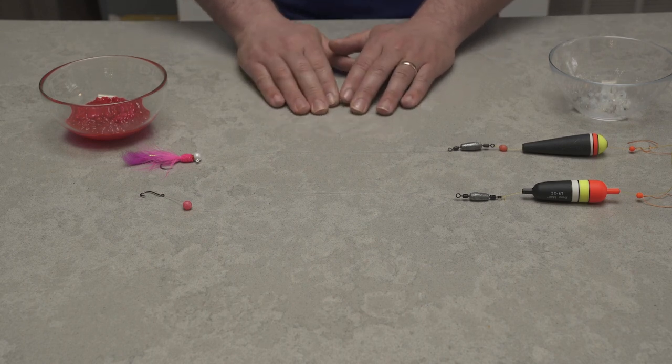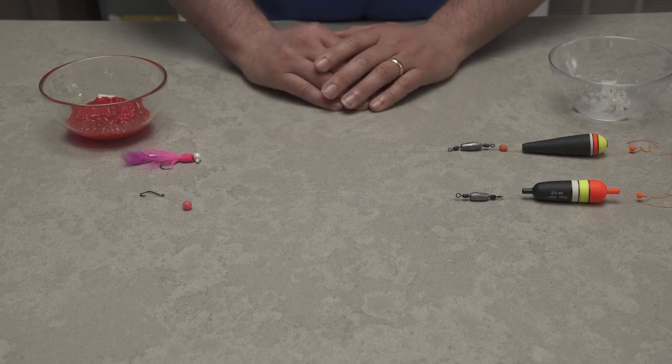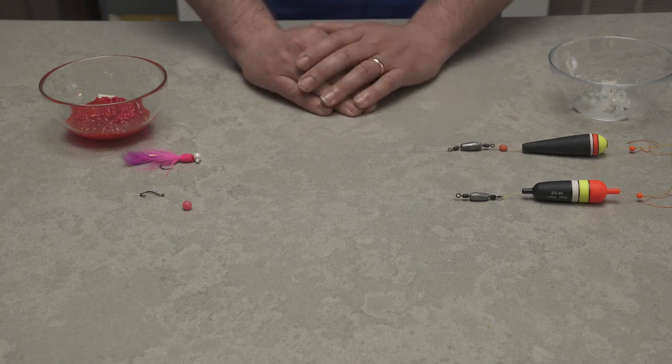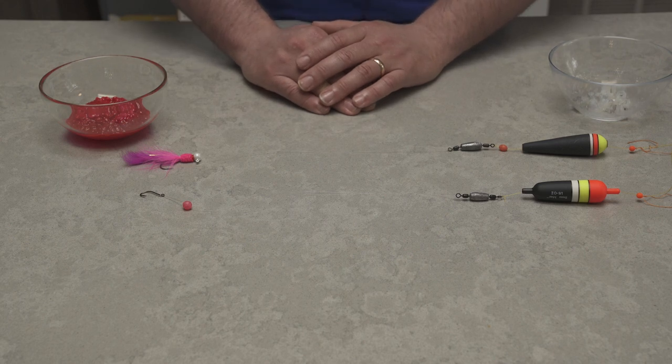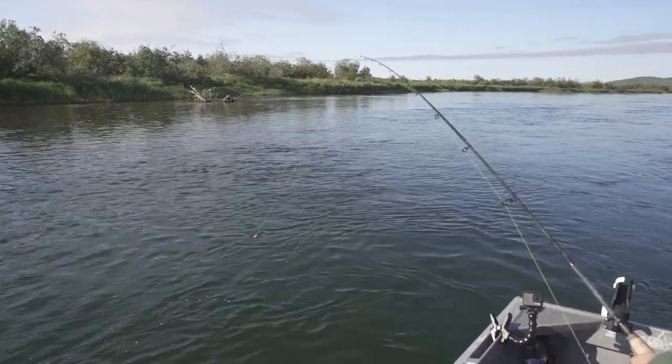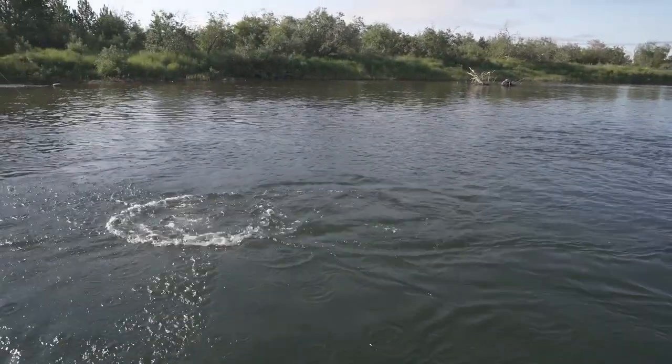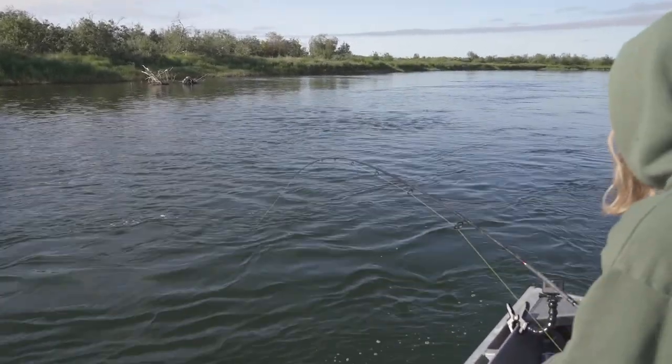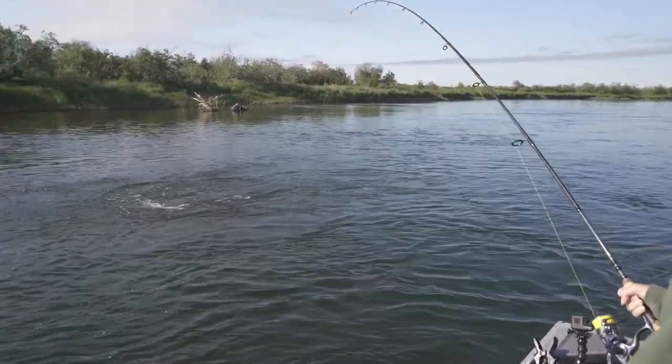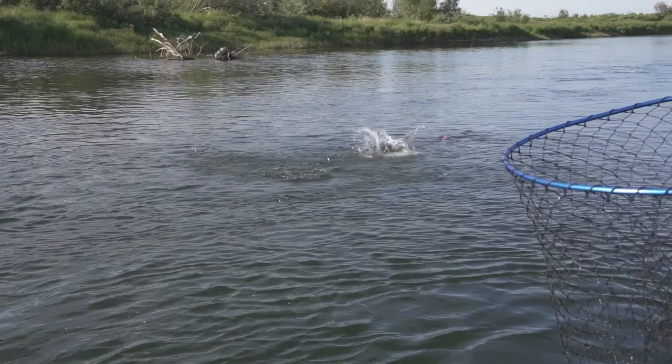I think the one thing that I would change or might possibly change moving forward with sockeye in mind specifically, is going to a slightly longer, more limber rod just to absorb the shock. For any of you kokanee anglers out there, you know that sockeye have extremely soft mouths and they're hard to keep hooked up. Especially when you hook them on either one of these setups, they go absolutely crazy. They're very akin to summer steelhead - jumping and flipping and tail dancing and going on tearing runs, just super erratic. And hooks pop out a lot of times.